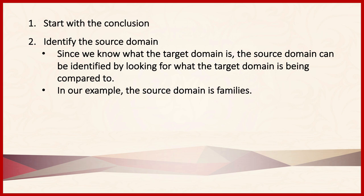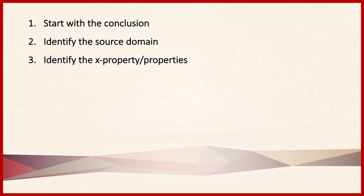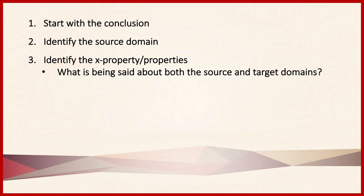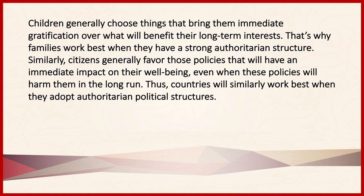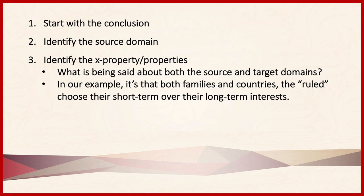Once we have the source domain and the target domain, we can identify what the X property or properties are. Remember that X properties are those things that are said about both the source and the target domains. Looking at our passage, we see that what is said about both families and countries is that the ruled choose their short-term interests over their long-term interests.